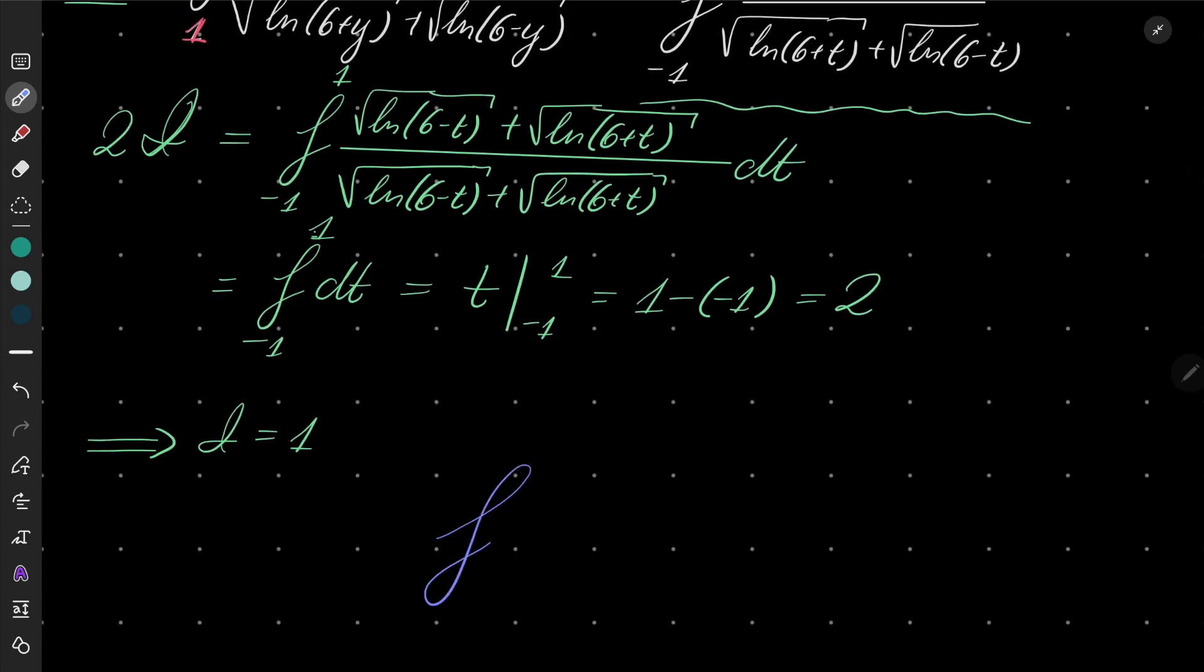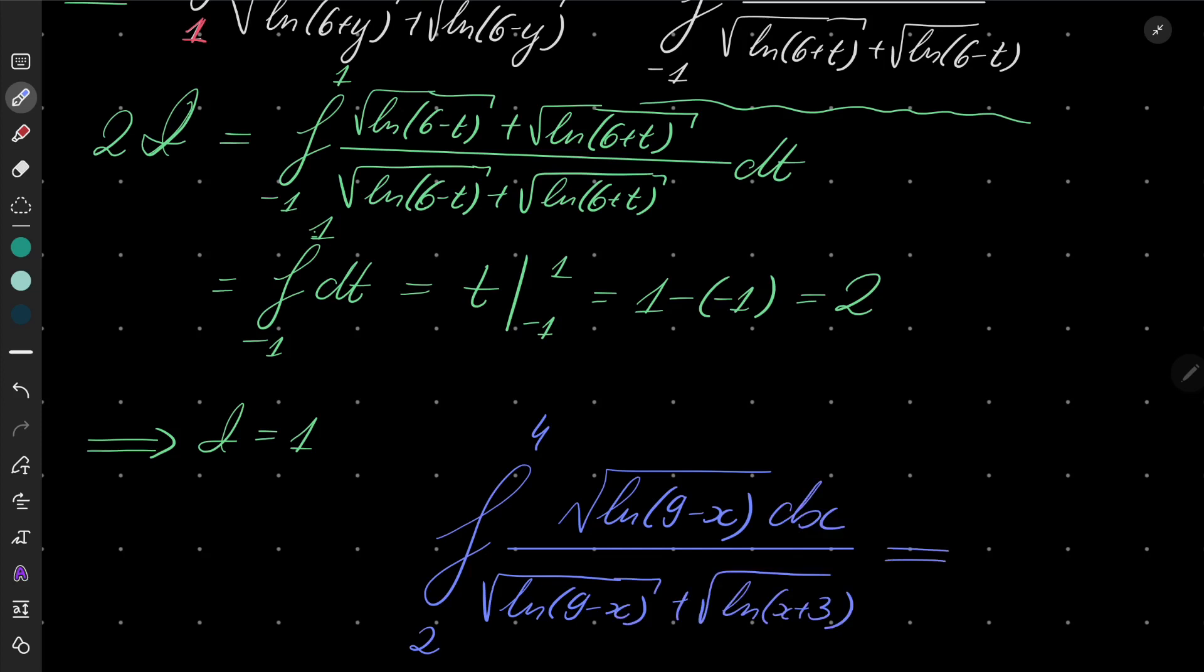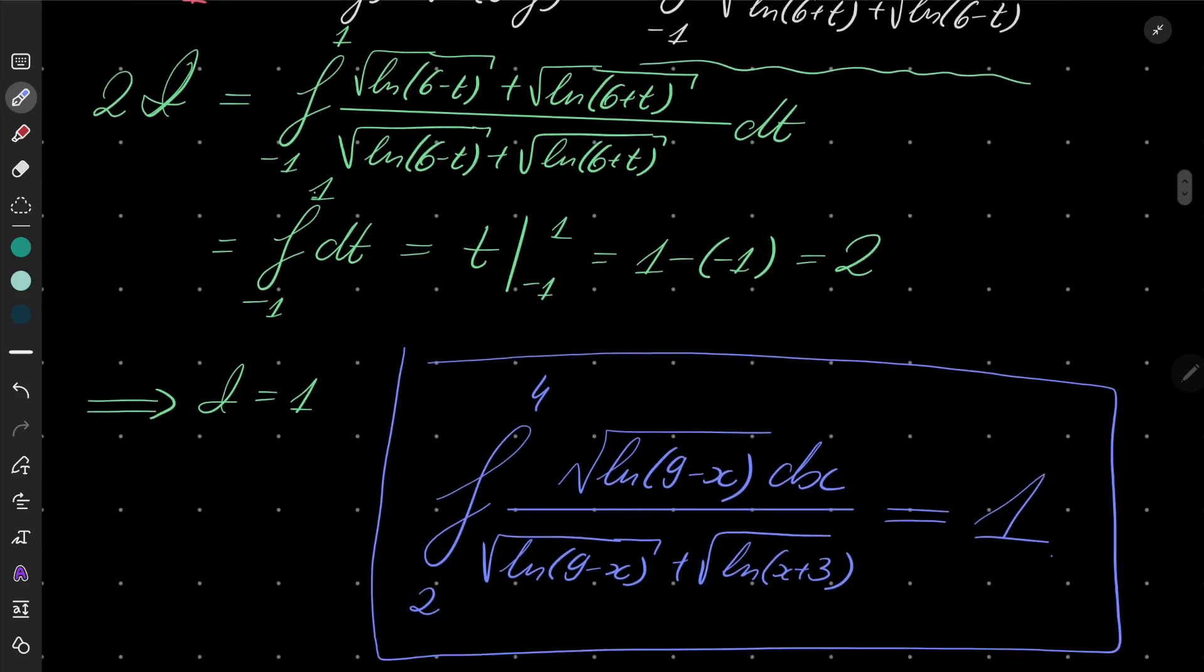So the integral from 2 to 4 of our original function is exactly 1. And that closes the video. So I hope that you learned something. This trick appears very often in various definite integral problems. And yes, that's it. So thank you for watching and see you soon.